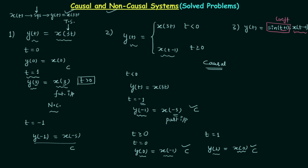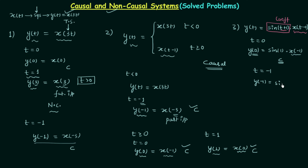You can follow the same process and select different time instances. For example, let t equal 0: we get y(0) equal to sin(1) multiplied by x(-1). The present output depends on the past input, so we have causal nature. Let t equal minus 1: we get y(-1) equal to sin(0) multiplied by x(-2). Again, the present output depends on the past input, so we have causal nature.